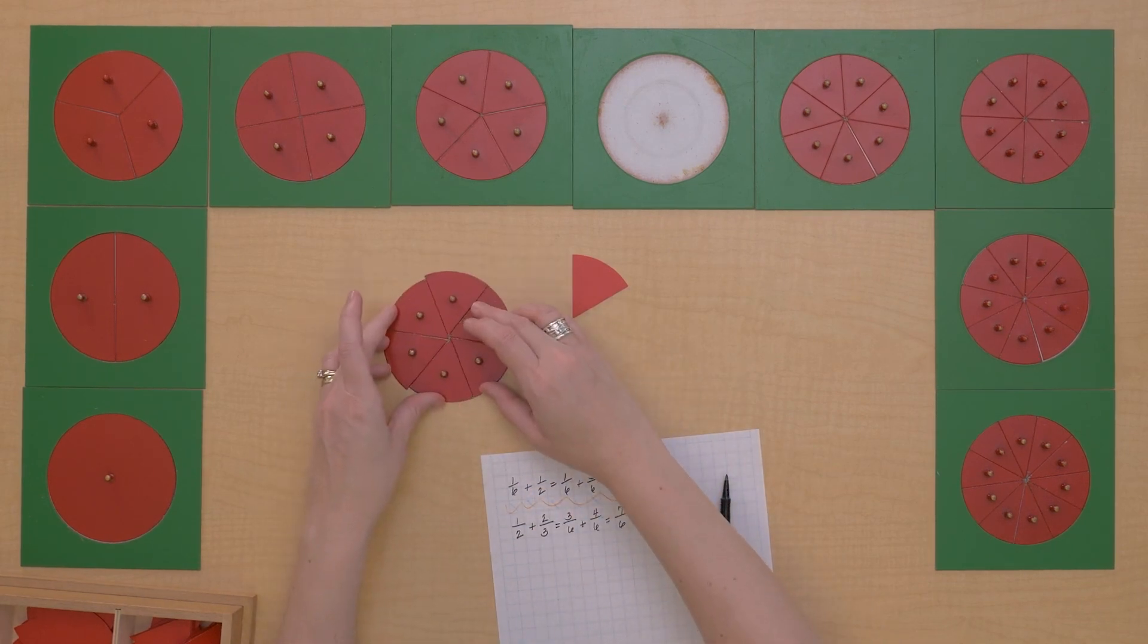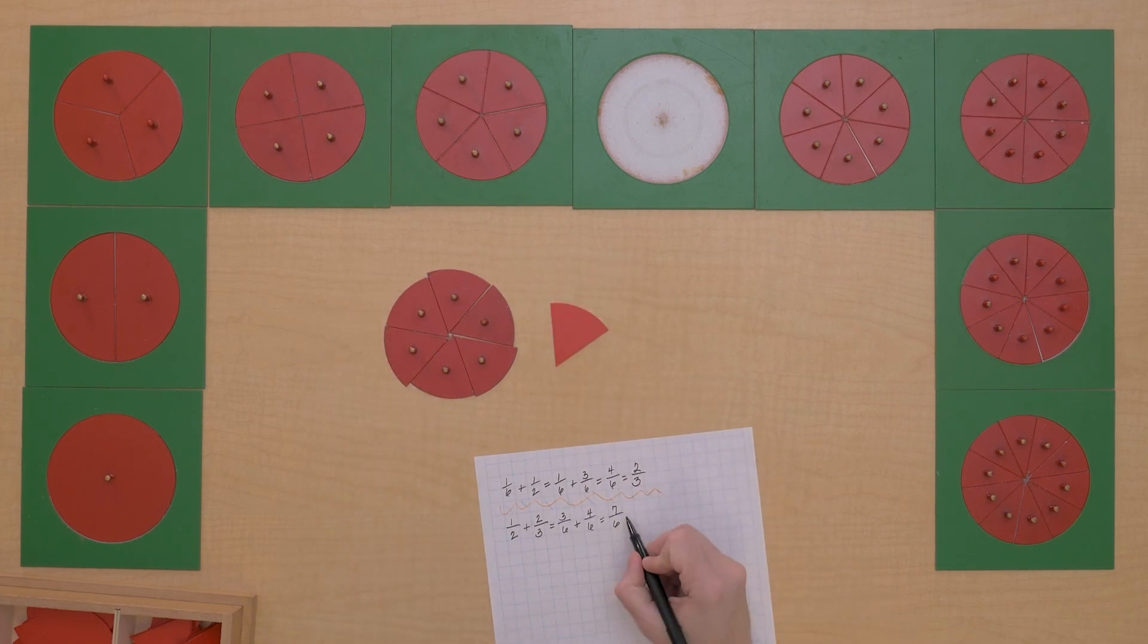So that means we need to change it to a mixed number. One and one-sixths.